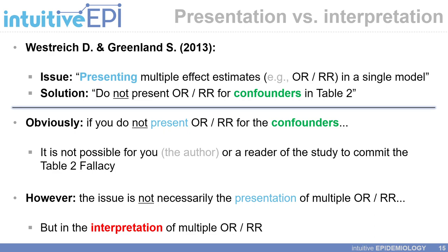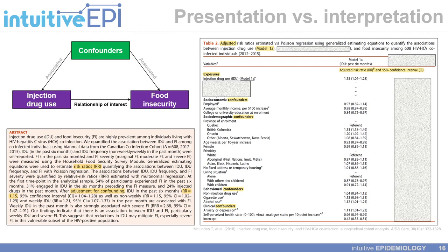You can't interpret multiple measures of effect from a single model if you only present one measure of effect. However, in my view, the issue is not necessarily the presentation of multiple odds ratios or risk ratios, but in the interpretation of multiple odds ratios or risk ratios. Going back to my paper and my example Table 2, I present several adjusted risk ratios — one for the exposure of interest, injection drug use, and others for the different confounding variables included in my multivariable model. Therefore, based on my reading of the Table 2 fallacy paper, this paper has the potential for a reader to commit the Table 2 fallacy and to start interpreting the risk ratios for the confounding variables, which are indeed shown here.